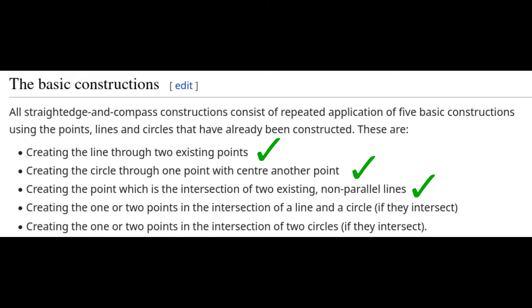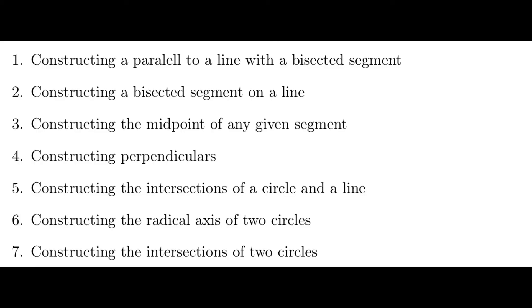To do these five constructions, we will need a few building blocks. First, making a parallel of a line with a bisected segment already on it. In all the constructions, we are going to use our chance to use the compass first, by constructing one circle with its center. This will be called the given circle. We will assume that the line passes through the center of the circle, so we will already have a bisected segment on it.